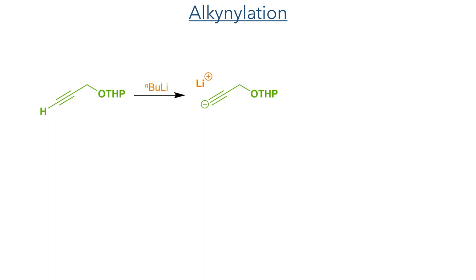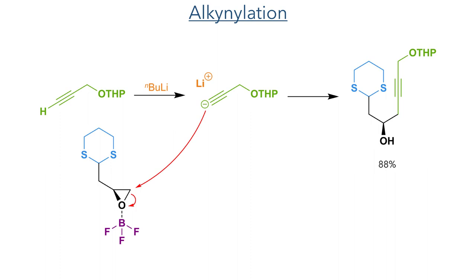In the next step, a THP-protected propargylic alcohol was deprotonated again using n-BuLi, and this was added directly to the reaction mixture containing the epoxide. Boron trifluoride was also added at this stage, which activates the epoxide and allows the alkyne to attack, opening the ring and forming the desired alcohol in an 88% yield over two steps.